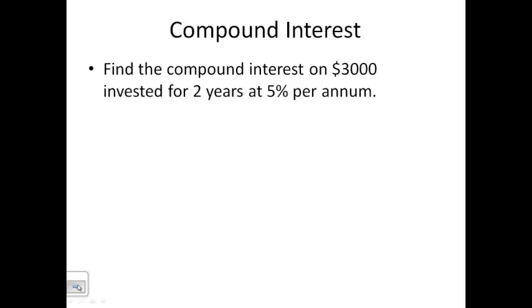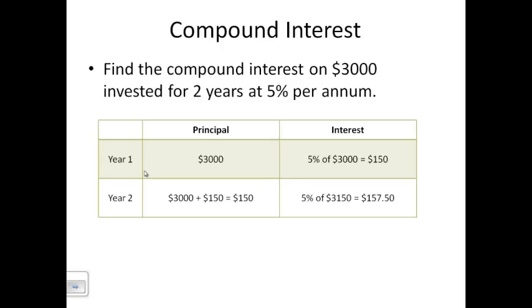Let's take a look at the example. To find the compound interest on a $3,000 investment for two years at 5% per annum, that means per year. The first way to solve this is by filling out a table. I'm going to look at the first year, where I had $3,000, and I got 5% for that first year. If I work that out, I'm just multiplying that by 5%, so I get $150.